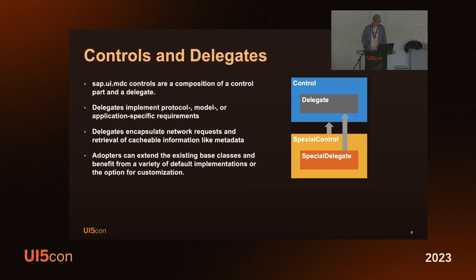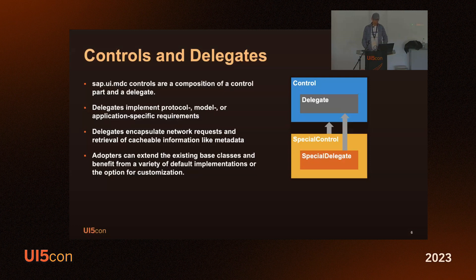Going into the architecture at a high level: MDC controls rely heavily on having a delegate — a separate class that implements everything protocol-, model-, or application-specific. You have the possibility and also the duty to implement it, because we do not currently have a setup where you can say 'I have a JSON model, I take this control, and I'm done.' But you gain a lot of flexibility, baked into this delegate setup. We have also abstracted the personalization into an engine in the MLibrary, so you could even combine it with a different persistence layer.